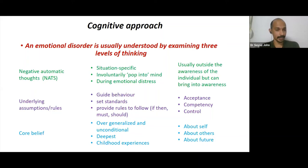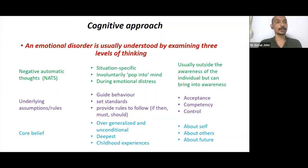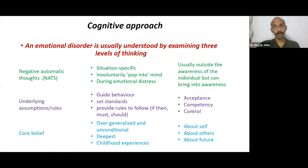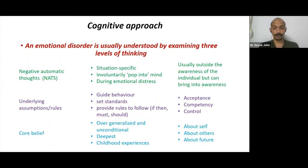To summarize cognitive theory: it focuses on cognition — thinking and interpretation. If our interpretations become illogical and irrational, we develop problems. When we are under emotional distress, cognitive errors and distortions are quite common, and those distortions lead to emotional and behavioral problems.